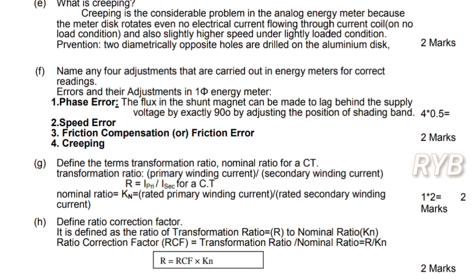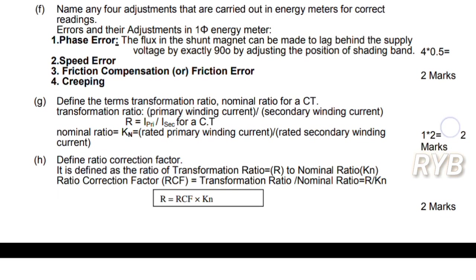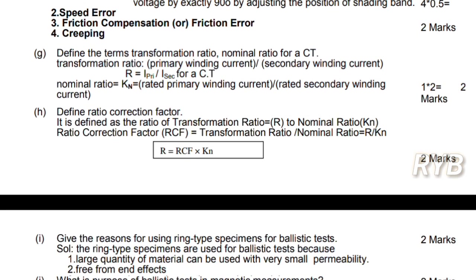Define the terms transformation ratio and nominal ratio of CT. The CT transformation ratio R is the ratio of primary winding current to secondary winding current: R = I_primary / I_secondary. The nominal ratio K_n is the maximum rated primary winding current to rated secondary winding current. The ratio correction factor RCF is defined as RCF = R / K_n. If you write one definition you will get one mark.